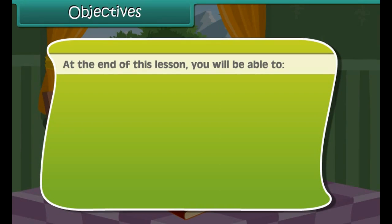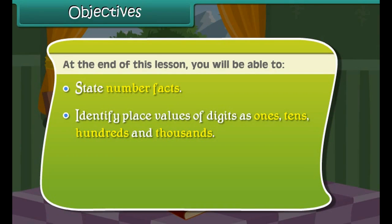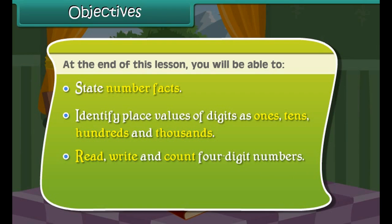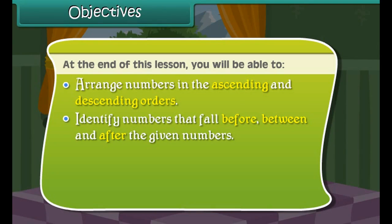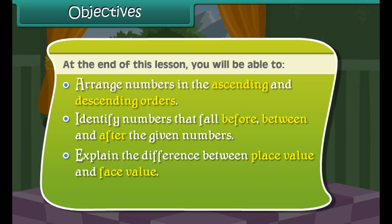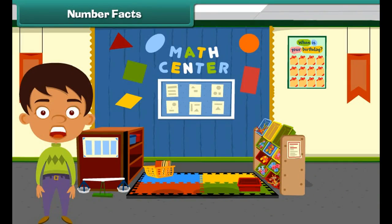At the end of this lesson, you'll be able to: state number facts; identify place values of digits as ones, tens, hundreds, and thousands; read, write, and count four-digit numbers; compare four-digit numbers; arrange numbers in ascending and descending orders; identify numbers that fall before, between, and after given numbers; explain the difference between place value and face value; and identify even and odd numbers.